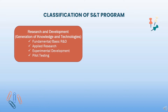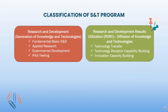Research and Development Results Utilization refers to the technology utilization and dissemination of knowledge and innovation generated from R&D to reach the end users. Knowledge and technologies are diffused through various channels that make up the national innovation system through Technology Transfer, Technology Receptor Capability Building, and Innovation Capacity Building.